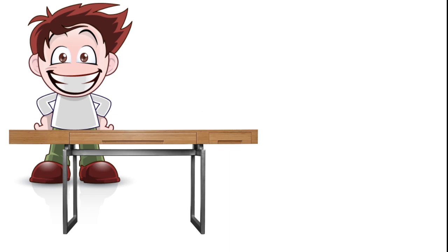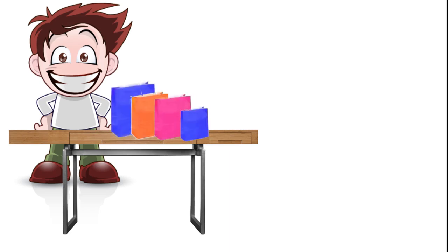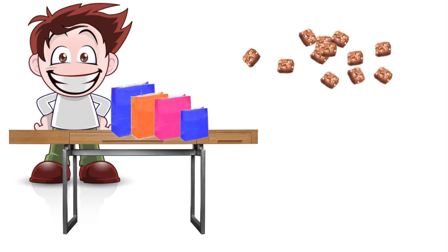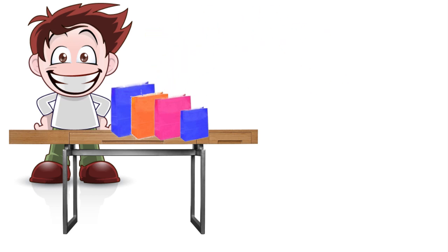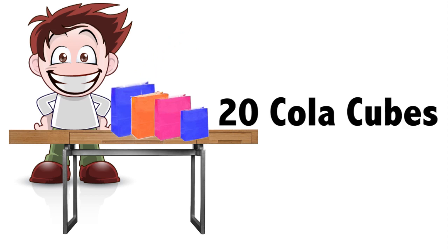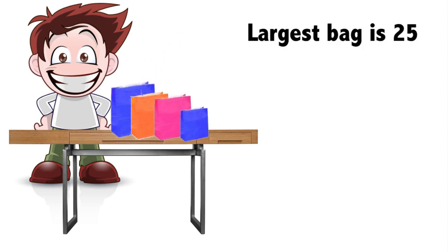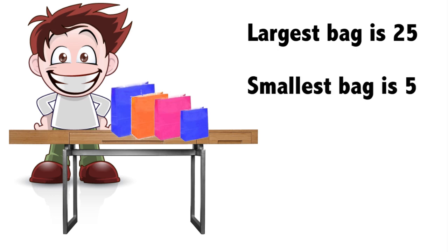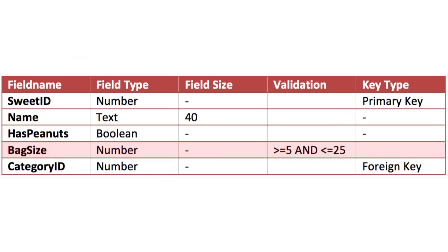Having fields that have a range is also a good idea. Bob sells his sweets in bags of different sizes depending on the type. For example, his English toffee is sold in a bag containing 10 toffees, and his cola cubes are sold in a bag of 20. The largest bag contains 25 sweets and the smallest just 5, so the range on the field 'bag size' is from 5 to 25.